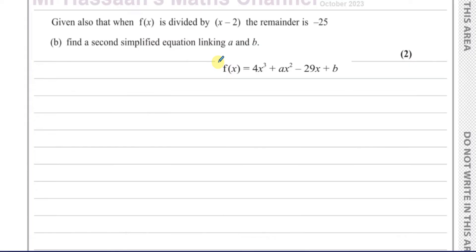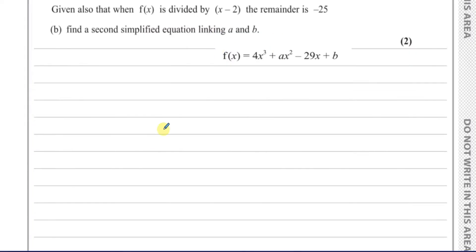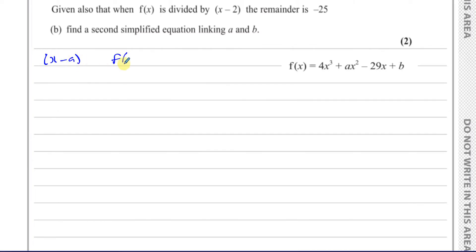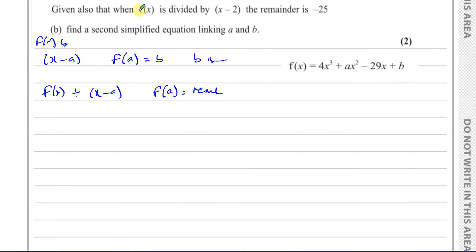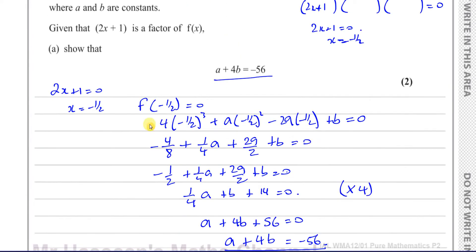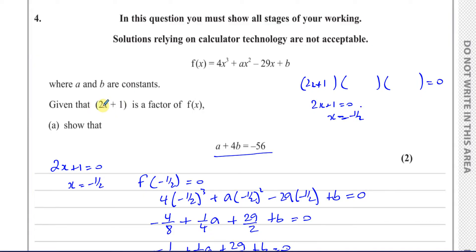They also tell us that when f(x) is divided by (x - 2), the remainder is 25. This uses the remainder theorem: if you divide f(x) by (x - a), then f(a) gives you the remainder. So if I substitute x = 2 into f(x), what comes out is the remainder. When the remainder is 0, it means it's a factor. In this case there's a remainder of -25, so it's not a factor — it's just a remainder.